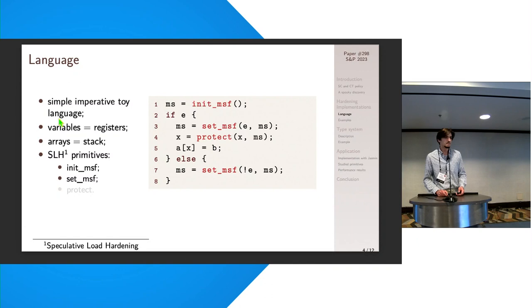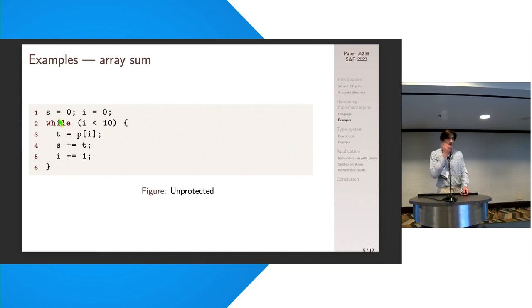So the SLH primitives consist of three primitives: initializing the flag, which corresponds to a fence operation for those of you who know. And then the set_msf is an update that is being done upon entering a branching instruction and verifying using branchless logic instruction that we are not actually mispredicting. And then the third primitive is the protect instruction, which is basically using the flag as a bit mask to protect the potential leaking values.